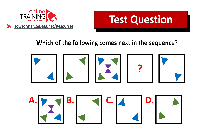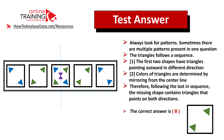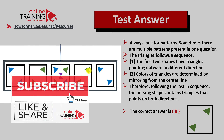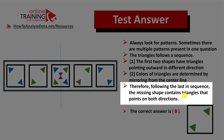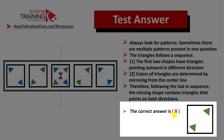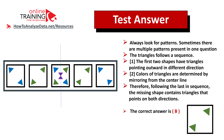Did you figure out the solution? Let's solve this challenge together. Typically there are patterns on test questions, and there are multiple patterns in this question. Pattern number one is that the first two shapes have triangles pointing outward in a different direction. You also see a mirror line, and from that mirror line the colors go in a different pattern — green and blue to the left. The same should happen to the right: green and blue. Therefore, the missing shape contains green triangles pointing in both directions. The correct answer is choice B.